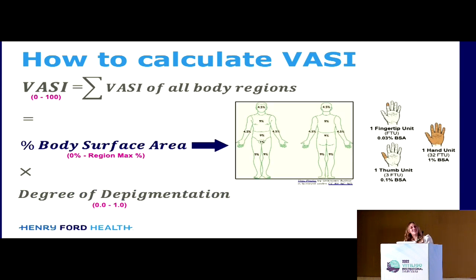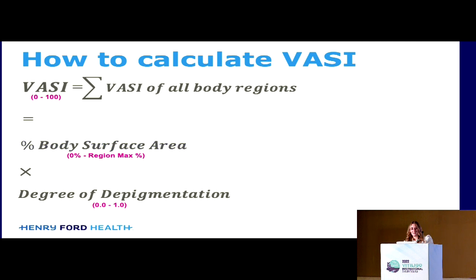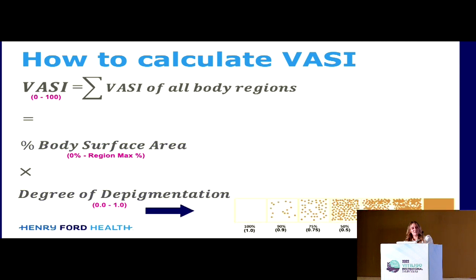The body surface area follows the rule of nines for each body surface region, and this can be approximated with hand, fingertip, or thumb units. One fingertip unit is 0.03% BSA, the hand unit approximates 1% BSA, and the thumb unit is 0.1% BSA. The degree of depigmentation ranges from 0 to 100% depigmented.